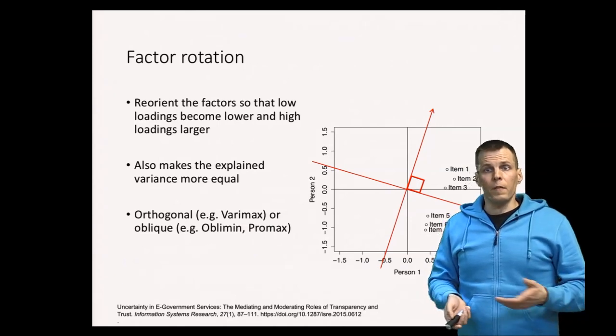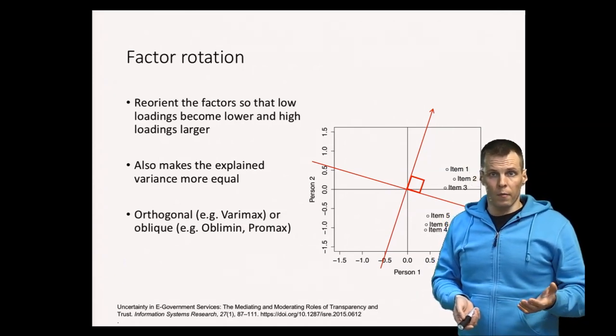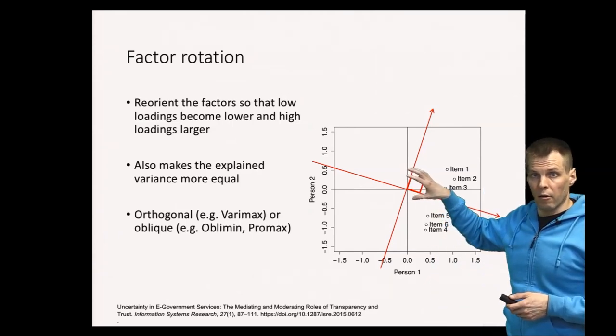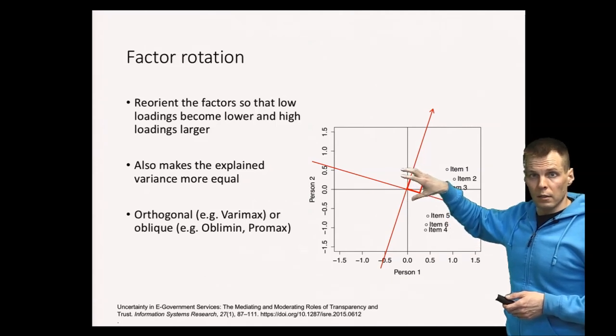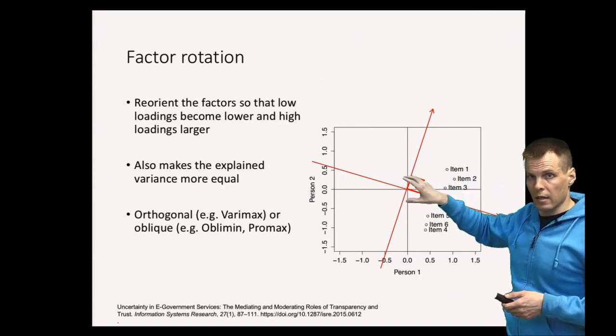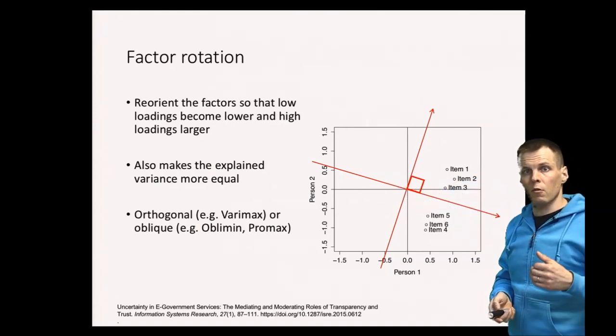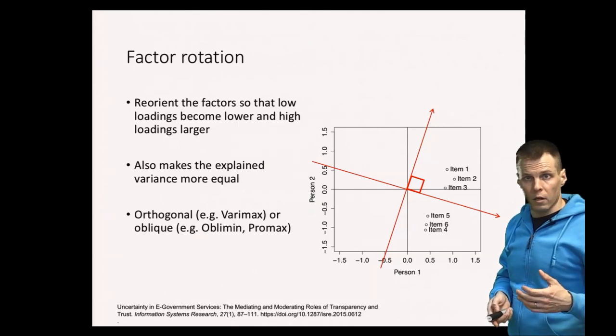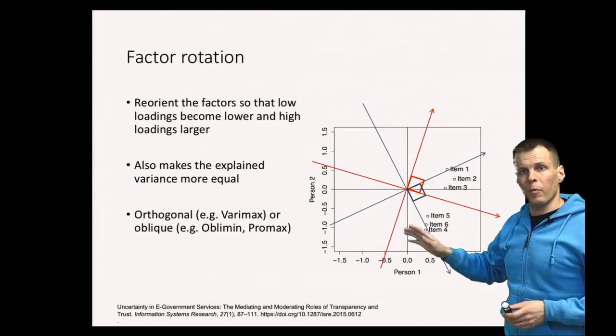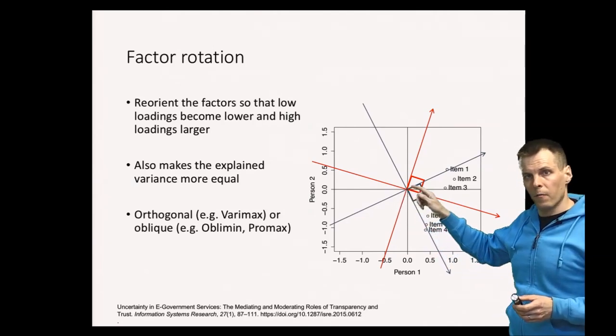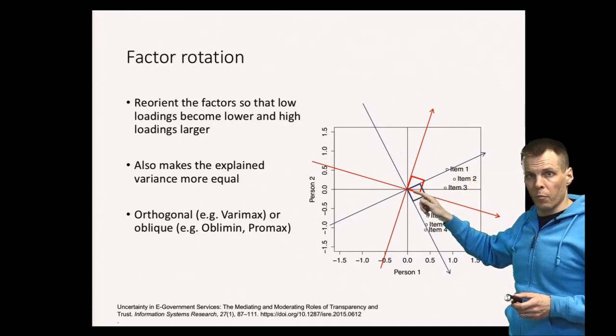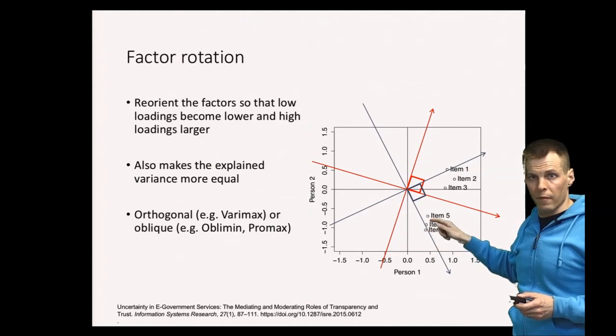So there are different techniques and the techniques are in two variants. We have oblique and orthogonal rotation. Orthogonal rotation maintains the factors that are uncorrelated. So we kind of take the factor solution here and then we rotate it around the zero axis like that. So we rotate those two arrows so that they point more toward the clusters of the observations. We rotate it a bit, about 45 degrees or a bit less, and then now the first factor points to the direction of 1, 2, 3 and the second factor points to items 4, 5 and 6.